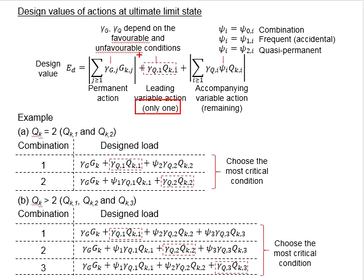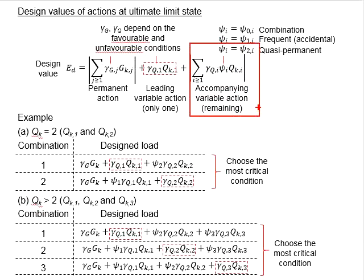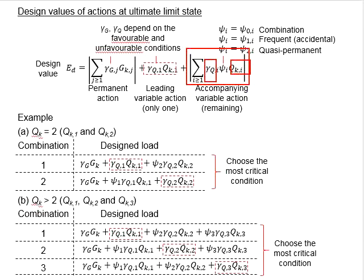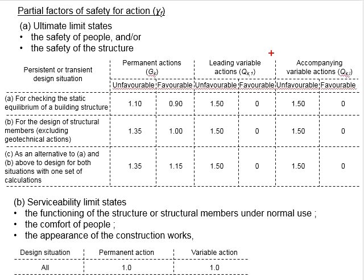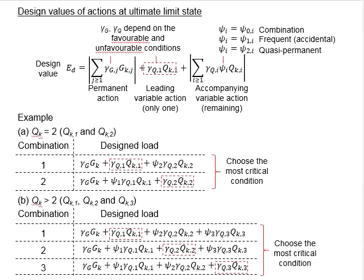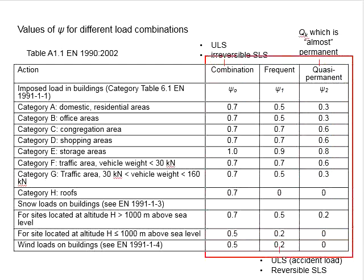There will be only one leading variable among the list of variable actions. The rest are considered accompanying variable actions. These are represented as the summation of accompanying variable actions Qk,i multiplied by the partial factor of safety γQ,i and by the reduction factor ψ₀,i due to the combination of design situations, as referenced in the respective tables.